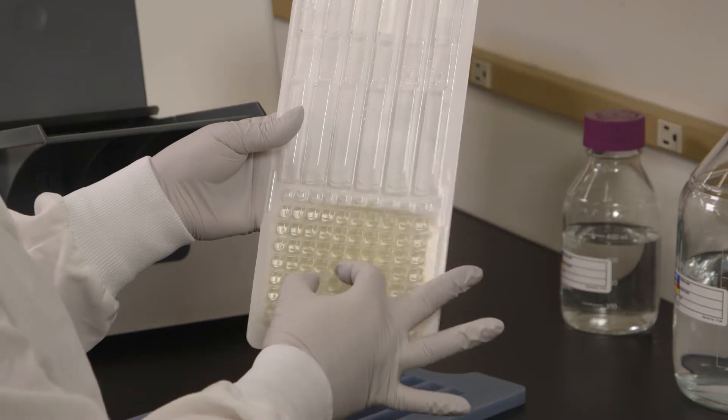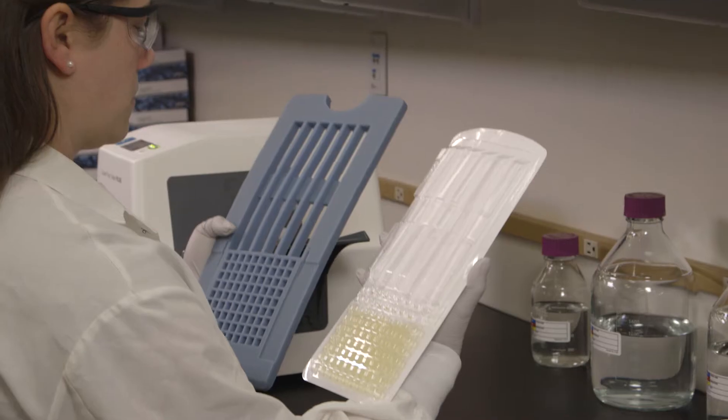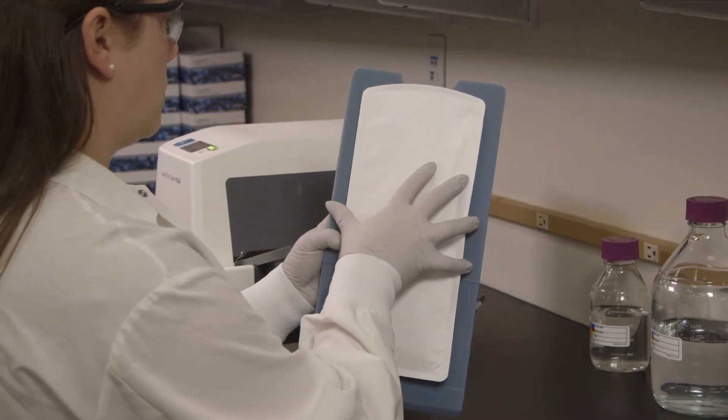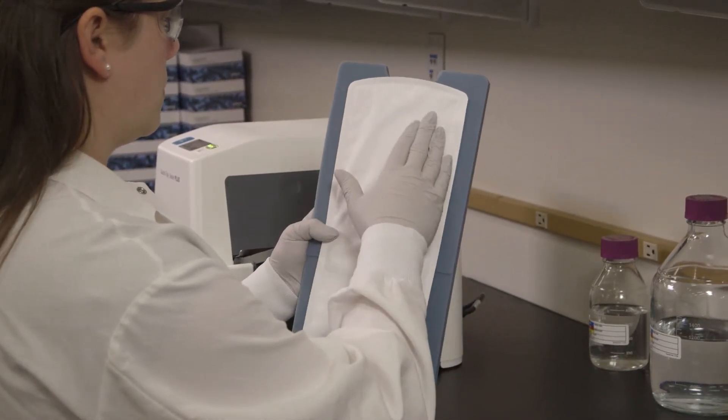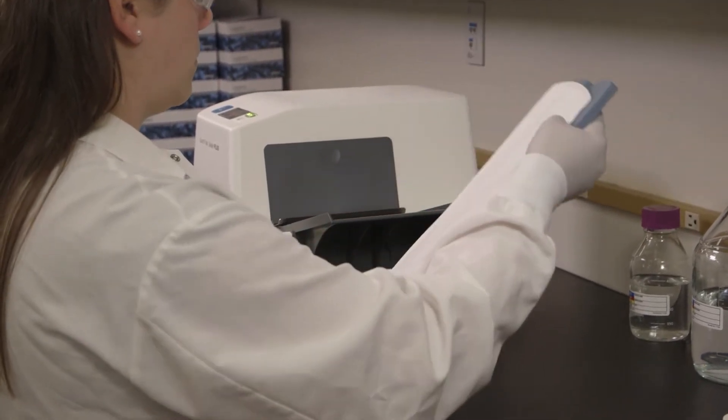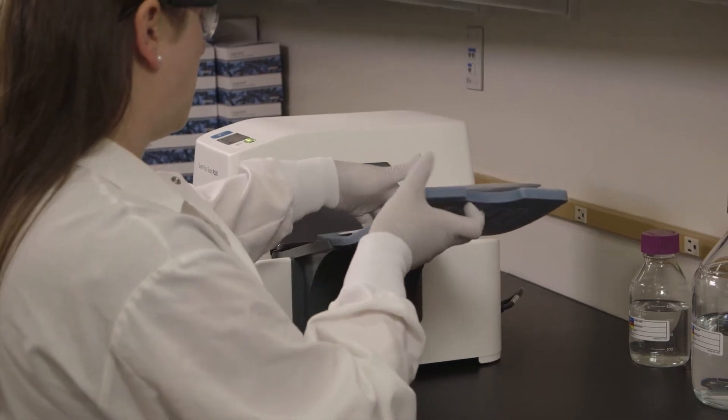Aseptically pour the sample mixture into the tray. Tap or flick the tray to remove air bubbles. Immediately place the filled tray on the rubber insert, making sure each well fits its corresponding hole. Push the insert with tray into the sealer until the sealer grabs the tray and pulls it into the slot.